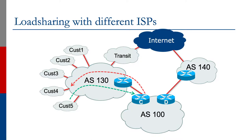The first example we'll work with is using the full BGP table from both upstream providers. Let's have a look at the diagram. We're on AS100 and we want to multi-home between AS130 and AS140, and we want to receive routes from both upstreams and try to balance outbound traffic.